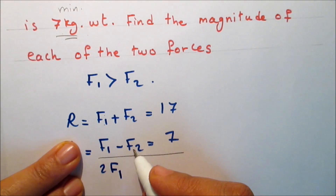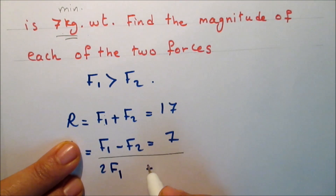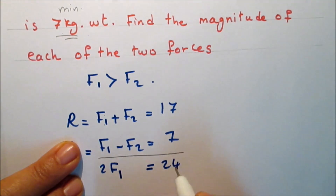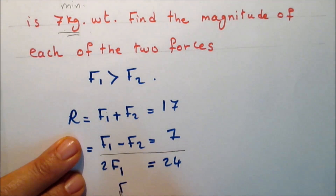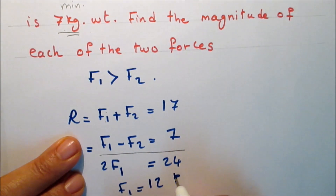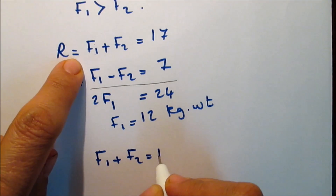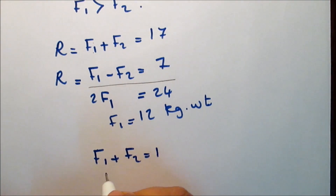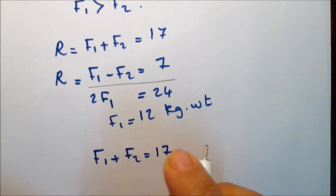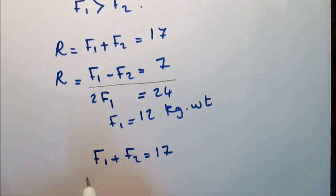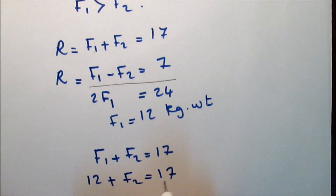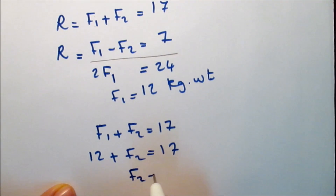So 2·F1 equals 17 plus 7, which is 24. Dividing by 2 gives F1 equals 12 kg-weight. Substituting into the first equation: 12 plus F2 equals 17, so F2 equals 5 kg-weight.